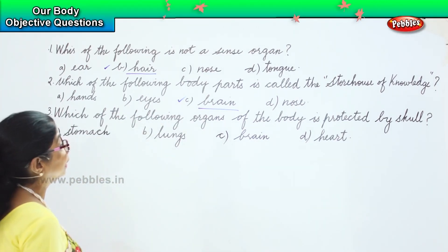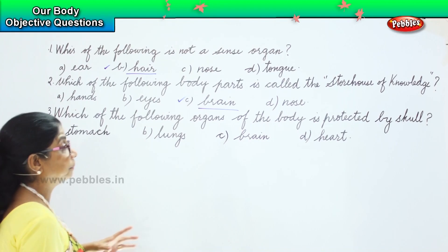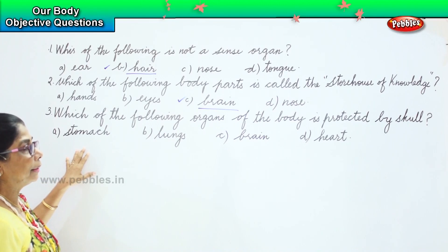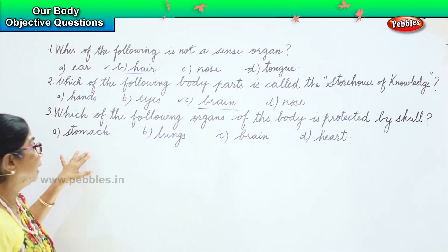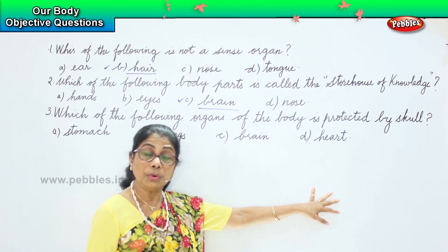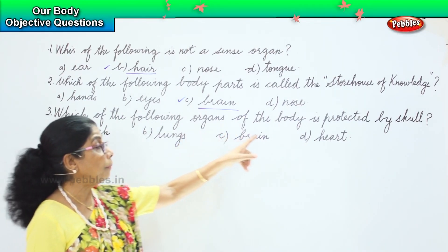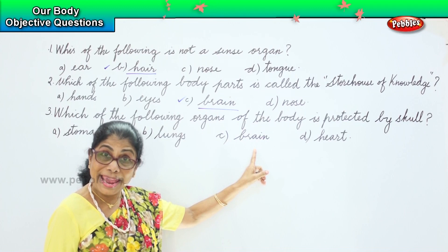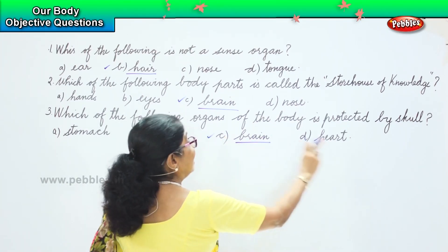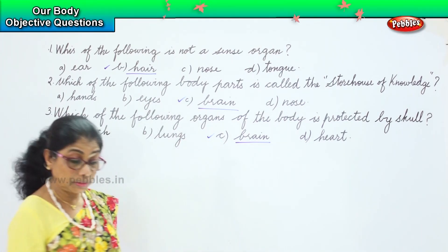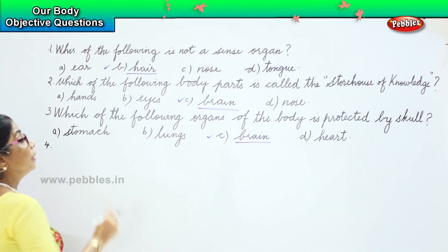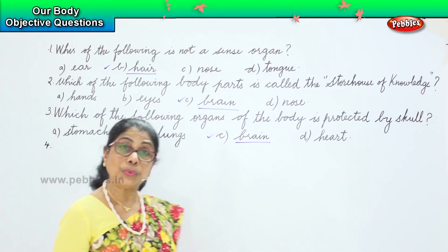Which of the following organs of the body is protected by the skull? Now, where is the skull — which part of your body? The head. Is it the stomach? No, the stomach is not in the skull. Are the lungs in the skull? No. Is the heart in the skull? No. So which organ is protected by the skull? Your brain. The brain is protected by the skull.